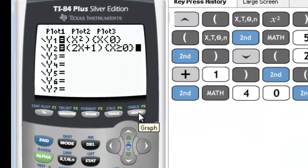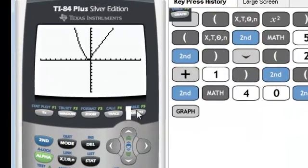Once we graph our piecewise function, you see that for the negative values of x, we have our quadratic graph. And then for the x values that are greater than or equal to 0, we have our linear equation.